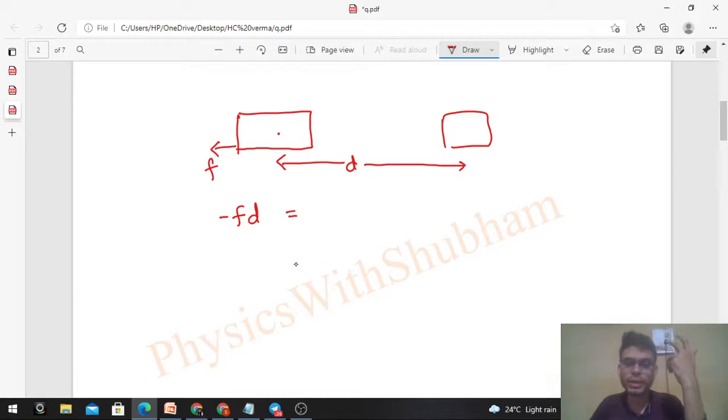Work done by all the forces is equal to change in kinetic energy: ½m(v² - u²). This is your change in kinetic energy. Final kinetic energy will be 0 because final speed is 0, so that is -mu²/2.